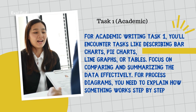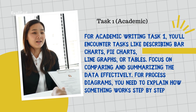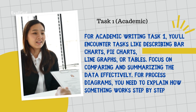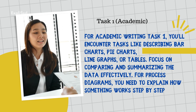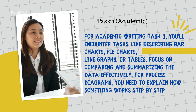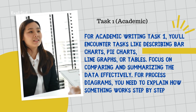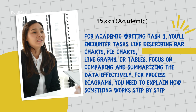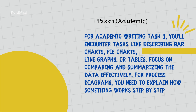For academic writing Task 1, you'll encounter tasks like describing bar charts, pie charts, line graphs, or tables — focus on comparing and summarizing the data effectively. For process diagrams, you need to explain how something works step by step.